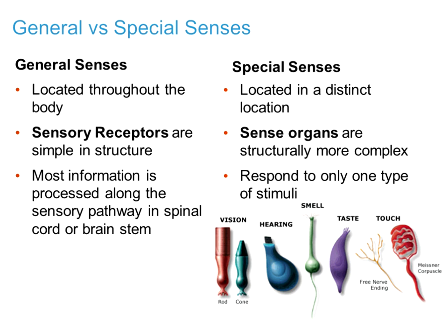The Special Senses are vision, hearing, smell, taste, and vestibular. Our General Senses are pain, itch, touch, pressure, temperature, and proprioception — so knowing your joint positioning, head positioning, and trying to prevent overstretching or breaking of tendons, muscles, and bones.